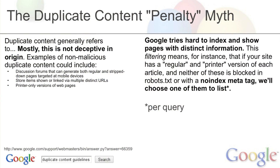On this slide, I'm going to show you some information from our webmaster guidelines on duplicate content. You can find more information by searching for 'duplicate content guidelines' on Google. But essentially what we say is we recognize that most duplicate content is not deceptive in origin. As a result, we're not trying to penalize it — we're just trying to show in our search results examples of pages that are distinct and have useful information that is different from the results we've already shown you.